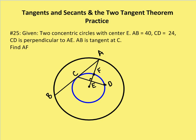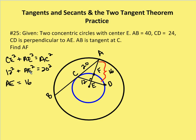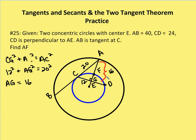This gets a little tricky. We'll walk through this step by step. I know that CD here is 24 units. I know that the radius from E to F is going to be the perpendicular bisector of CD. So I can divide CD into two segments. We're going to label this point of intersection between EF and CD as G.